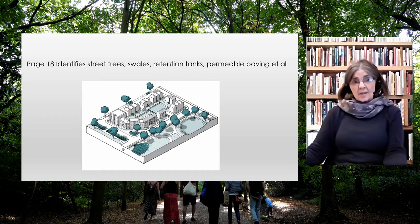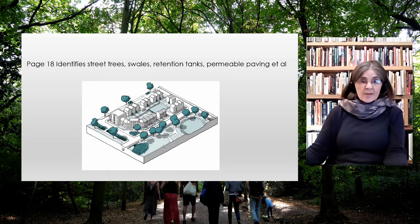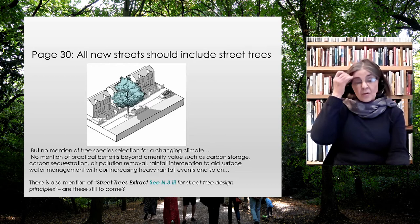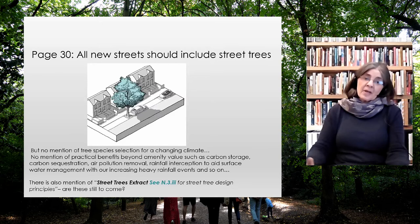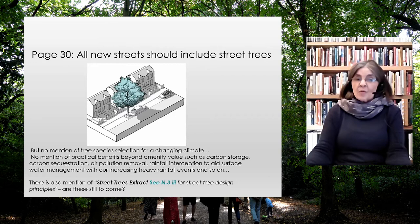So what does the design guide say about trees? There's a diagram with street trees and various elements, though I don't think the trees are actually integrated with the SuDS, and that's something we should take up. Page 30 says all new streets should include street trees — I'm not sure how realistic that is — but it would be worth highlighting the benefits: their ability to store and sequester carbon, remove pollution, and help with rainfall interception.